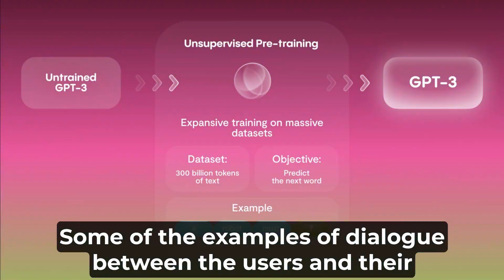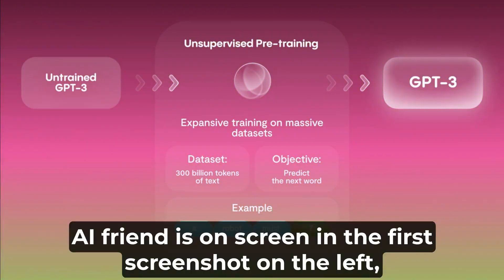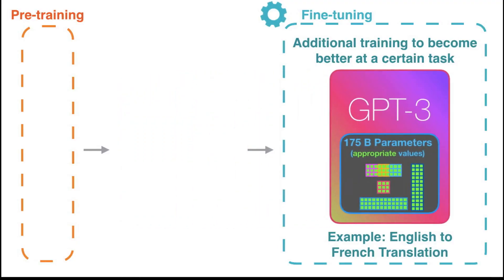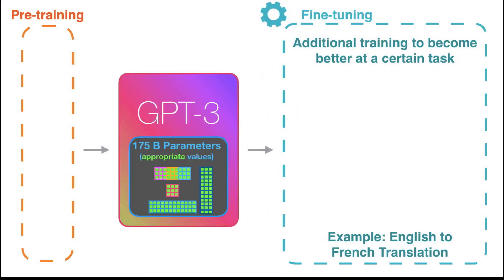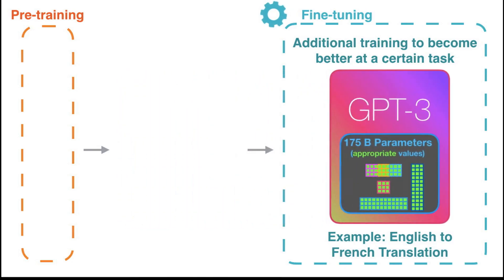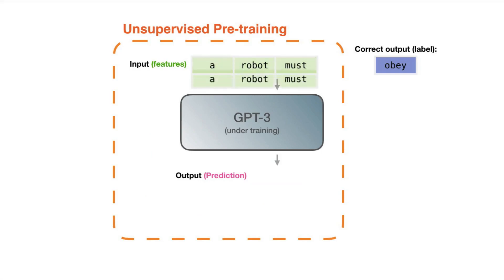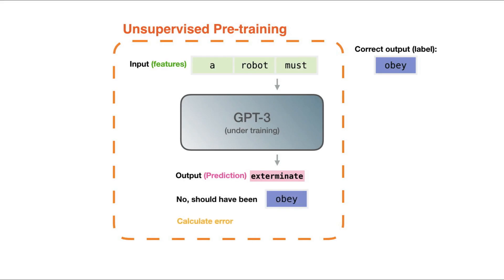Some examples of dialogue between users and their AI friend are shown on screen. The generative model that Replika uses is GPT-3, which stands for Generative Pre-trained Transformer Model. It's an auto-regressive language model that uses deep learning to produce human-like text — the third generation in the GPT series created by OpenAI, with access to over 175 billion parameters, making it the largest language model ever built.